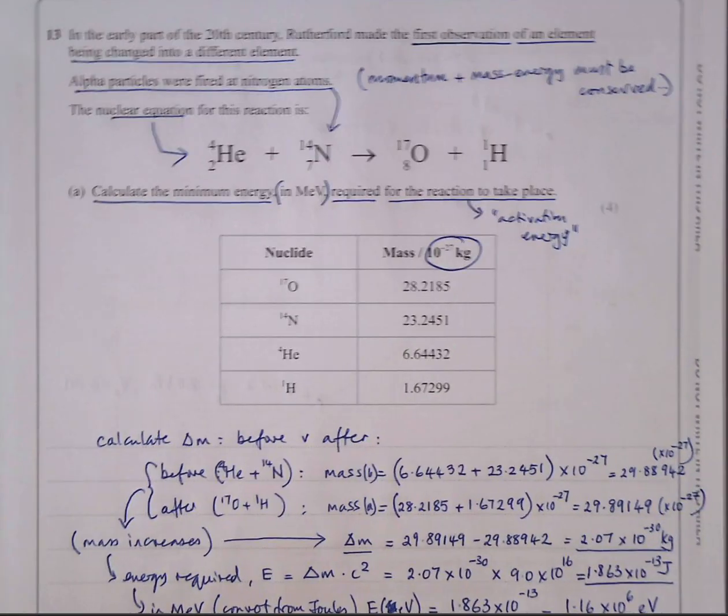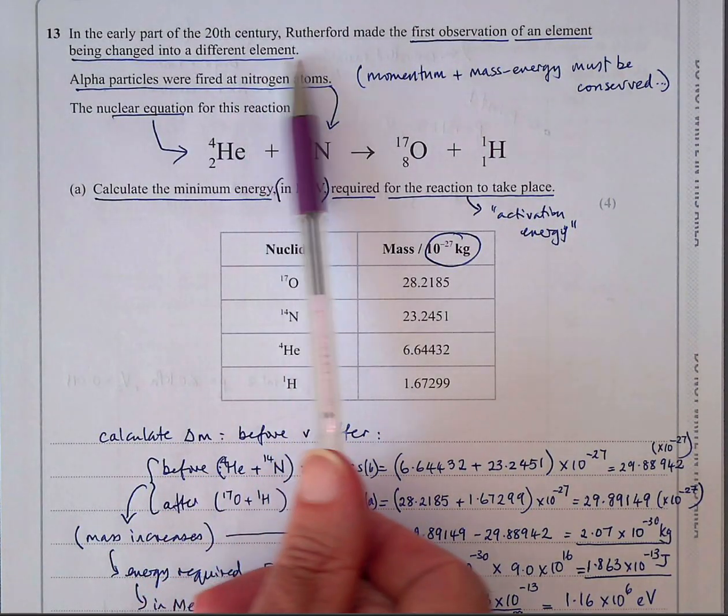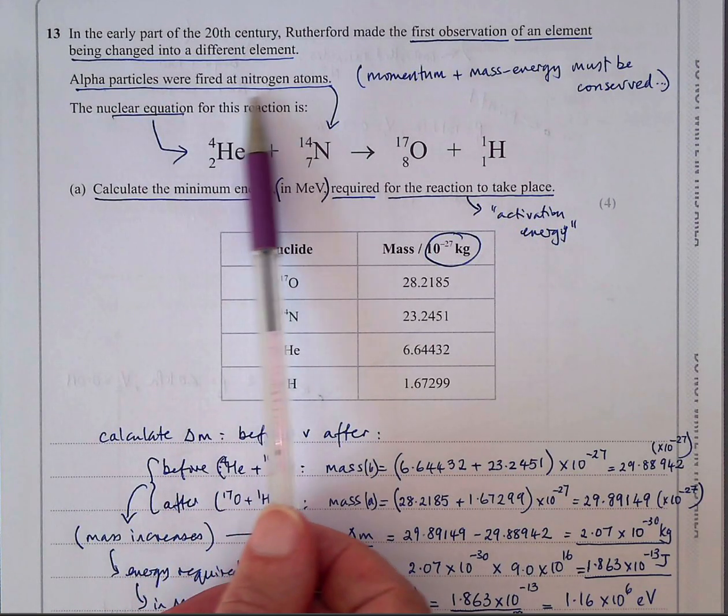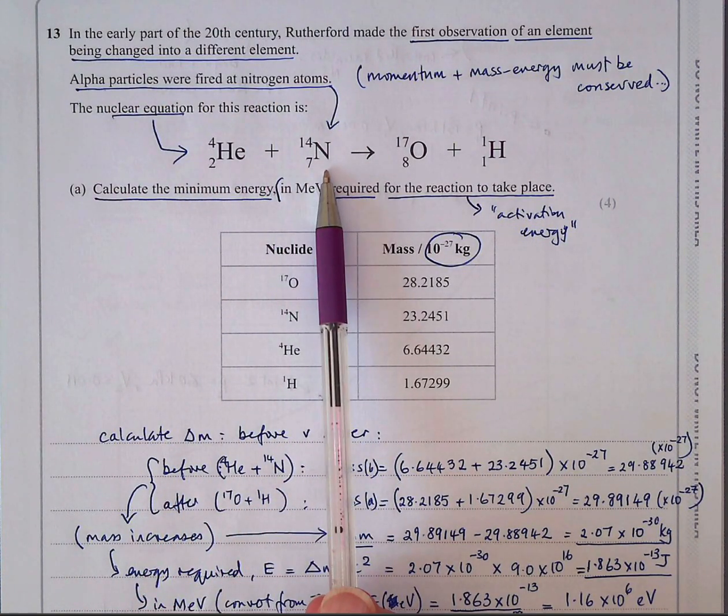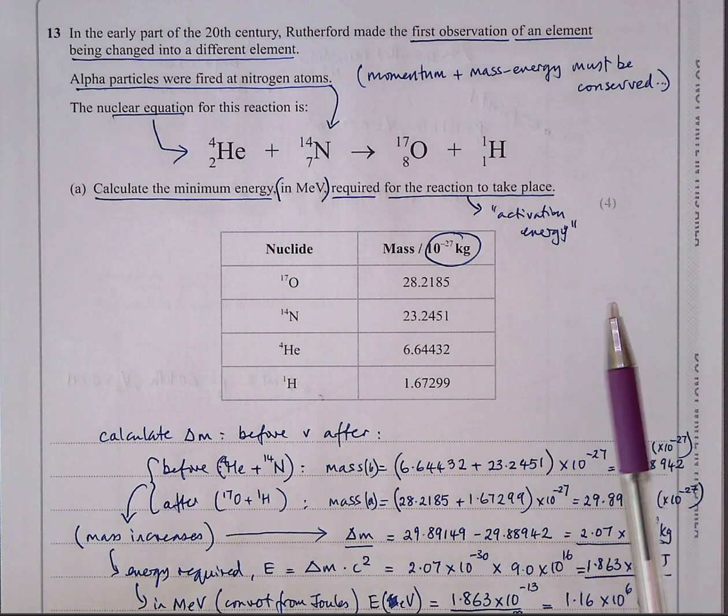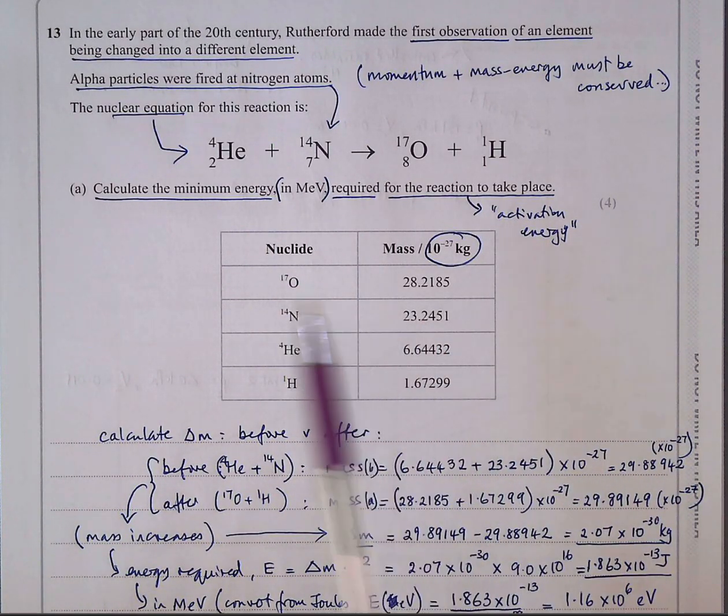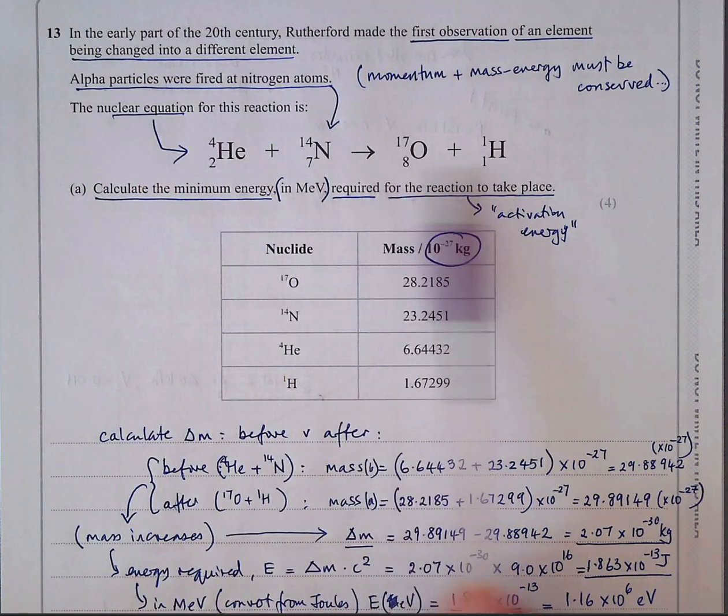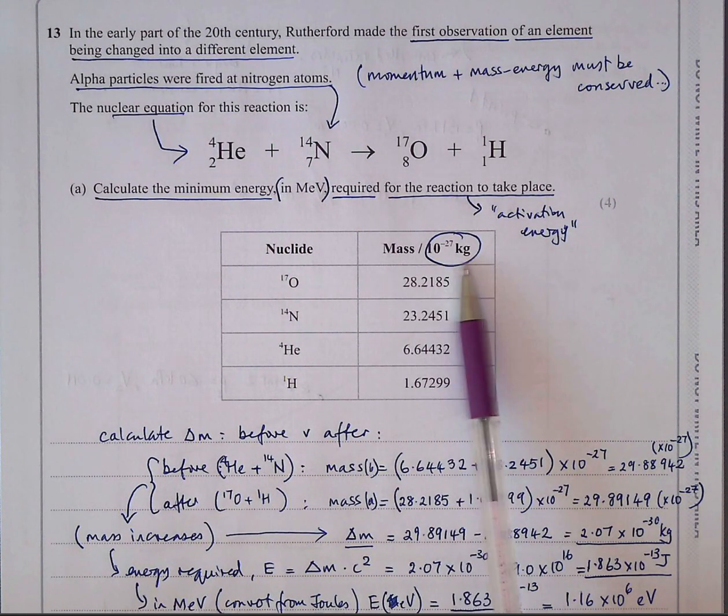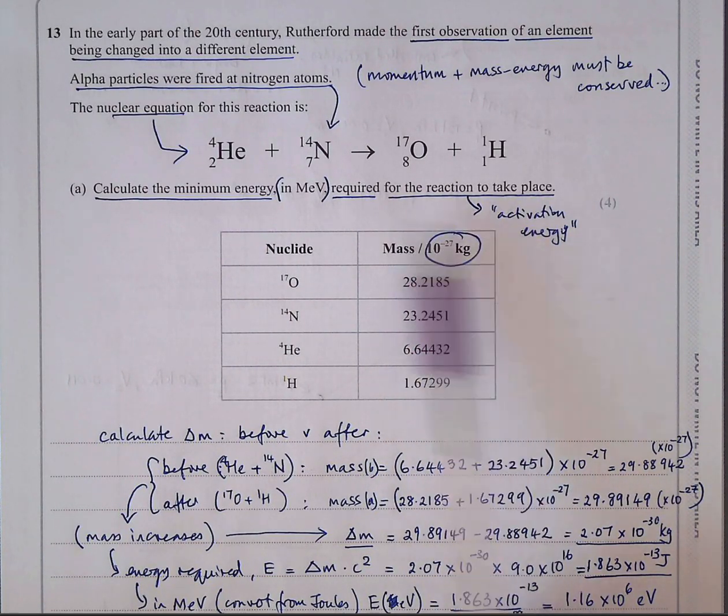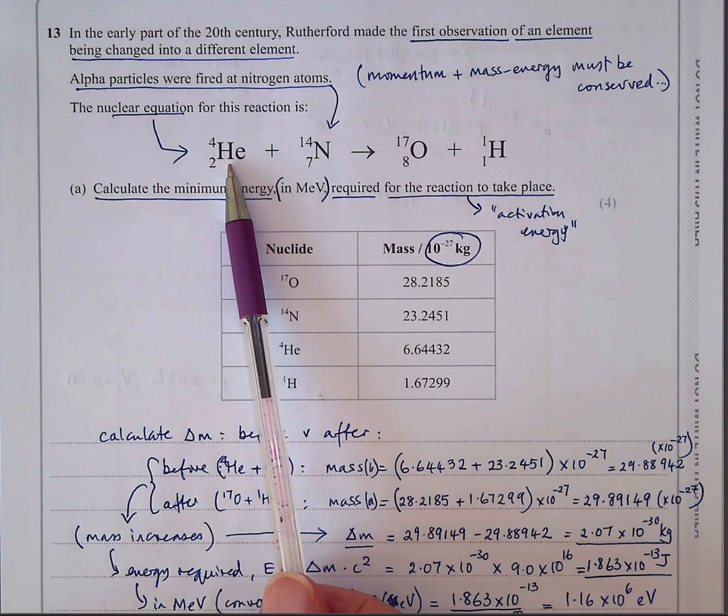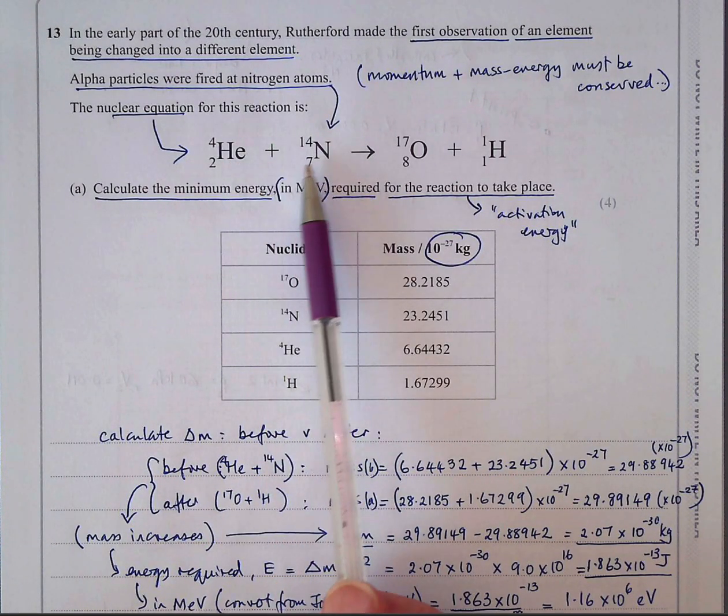Question 13. In the early part of the 20th century, Rutherford made the first observation of an element being changed into a different element. So alpha particles are fired at a nitrogen atom or nitrogen atoms. So momentum and mass energy must be conserved is my first thought. So I kind of put my thoughts down as I'm reading the question to predict, if you like, what the examiner's going to go into. The nuclear equation is given. It's balanced already, but you've got to calculate the minimum energy in mega electron volts required for the reaction to take place.